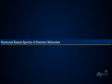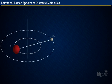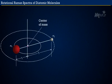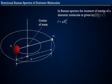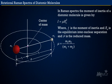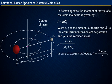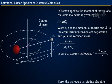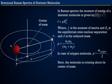Rotational Raman spectra of diatomic molecules: The moment of inertia is I equals mu·R₀², where R₀ is the equilibrium internuclear separation and mu is the reduced mass, given by mu equals M1·M2 divided by M1 plus M2. For an oxygen molecule, mu equals M(oxygen) divided by 2, with the molecule rotating about its center of mass.